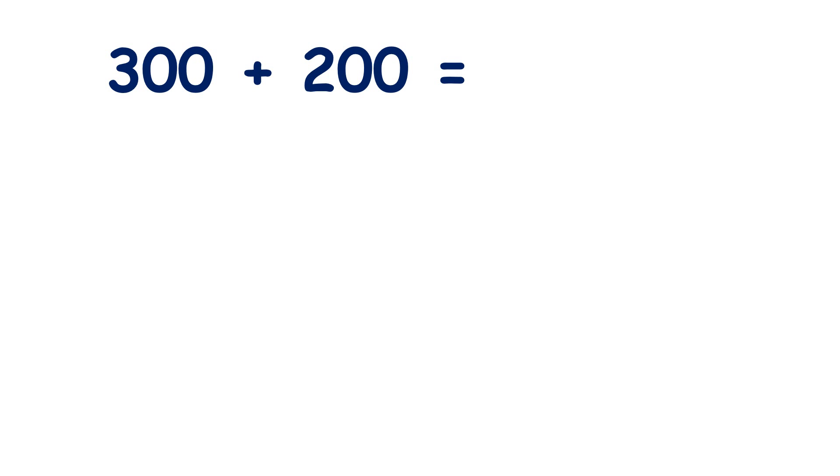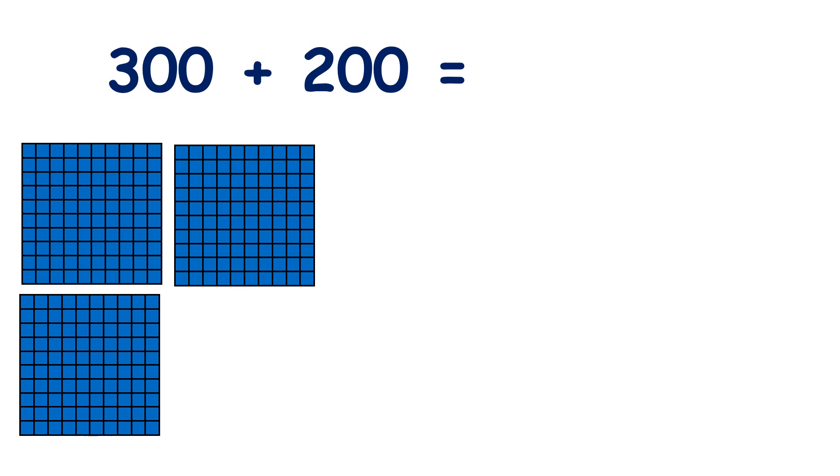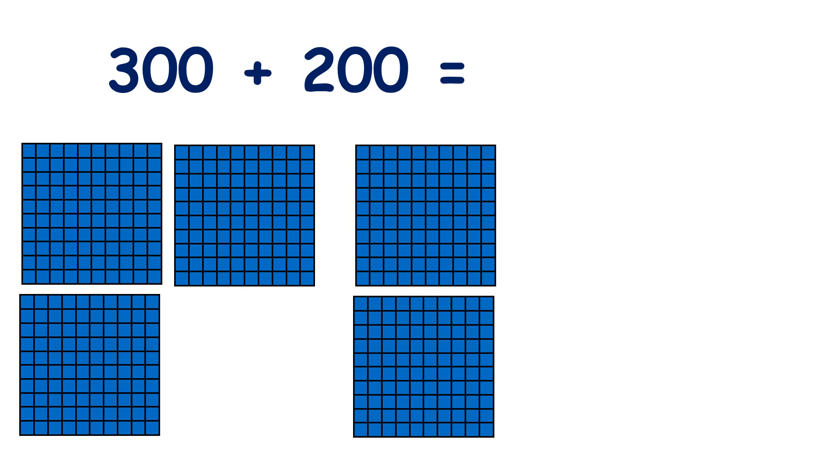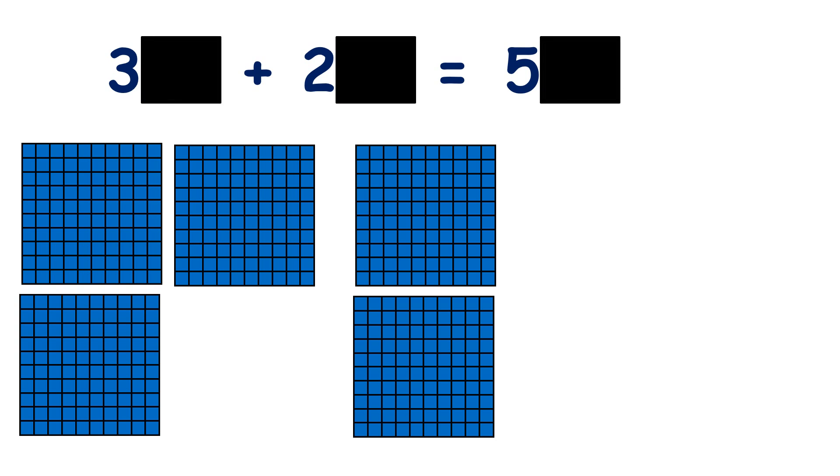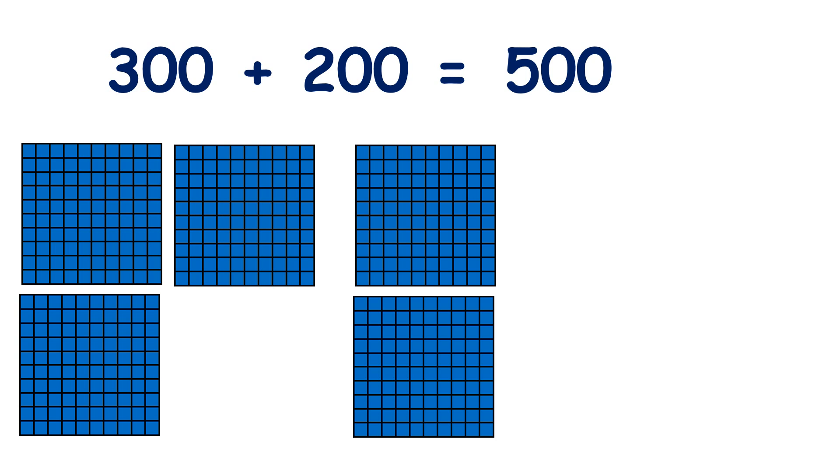We can add multiples of 100, so here we have 300 plus 200. You can see that the total is 500, because if we know that 3 plus 2 is 5, we know that 300 plus 200 is 500.